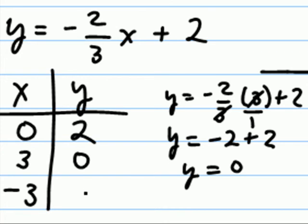Likewise, if x is a negative three, the threes will cancel. Negative one times negative two gives us a positive two, plus two gives us four.